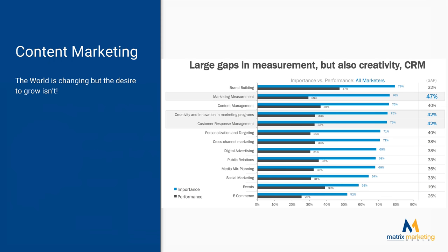These figures come from my friends over at Adobe Marketing. We can see the marketing objectives at the left of the chart, with bars colored in blue and gray — the blue represents importance and the gray the performance. Looking at the third line, content management, the importance is high at 76%, yet performance is lagging behind at 36% — that's a 40% gap. What's yours?